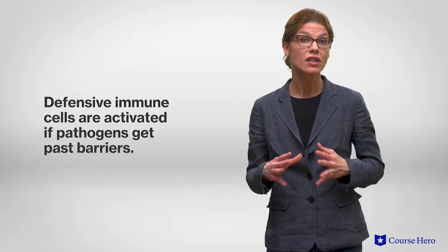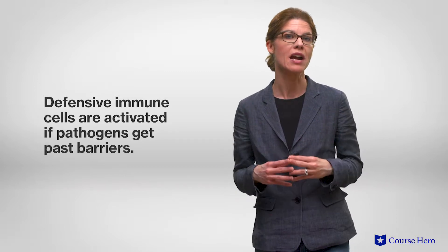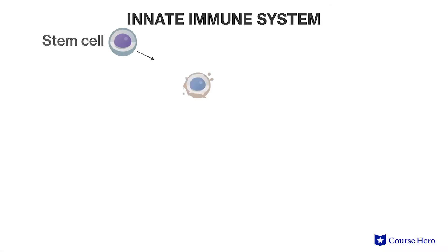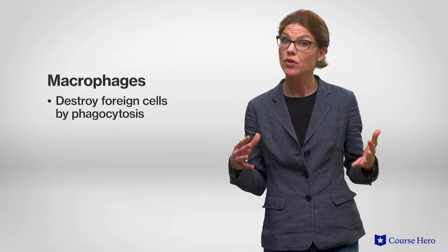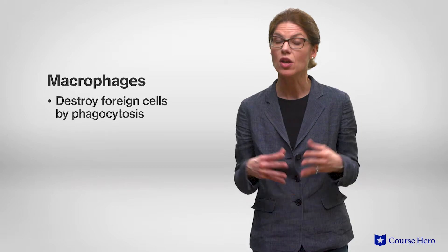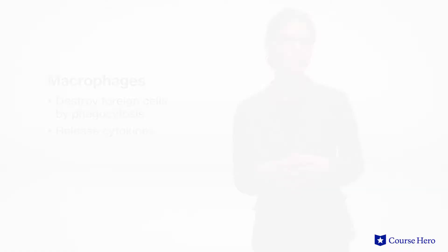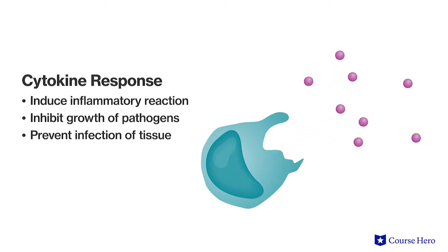Defensive cells of the internal innate immune system are activated if a pathogen passes the external barriers. A very broad range of pathogens is recognized by the innate immunity and the response is nonspecific. The macrophage is an example of a nonspecific immune cell. Macrophages, in addition to engulfing foreign cells and destroying them by the process of phagocytosis, also release cytokines. These chemicals induce an inflammatory reaction in the body to inhibit the growth of pathogens and prevent the infection of tissues.